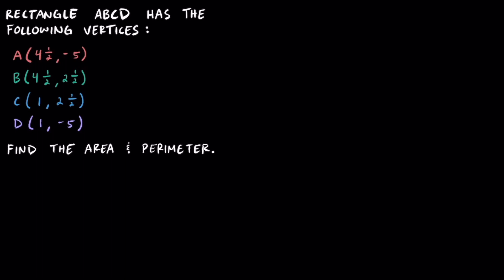Rectangle ABCD has the following vertices on the screen in front of you. What we need to do is find the area and perimeter of this rectangle. And if you weren't sure, the word vertices just means corners of this rectangle.